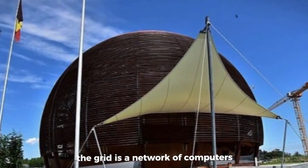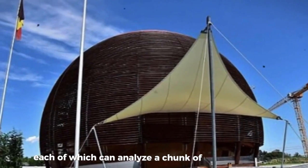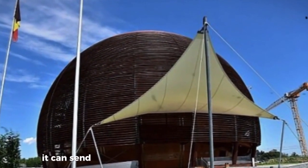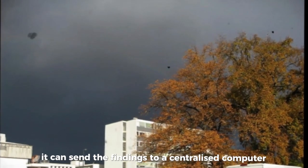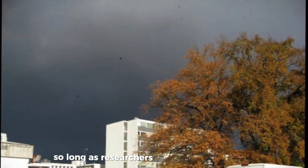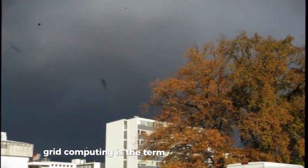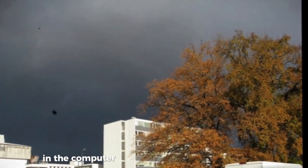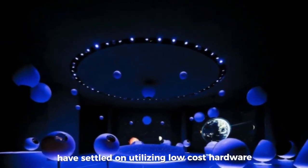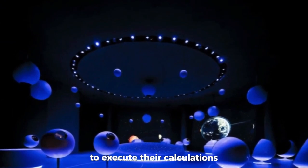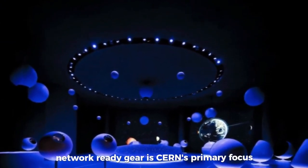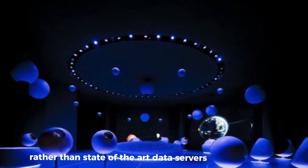The grid is a network of computers, each of which can analyze a chunk of data on its own. Once a computer completes its analysis, it can send the findings to a centralized computer and accept a new chunk of data. The method is effective so long as researchers can partition the data. Grid computing is the term used to describe this method in the computer industry. The researchers at CERN have settled on utilizing low-cost hardware to execute their calculations. Commercially available, network-ready gear is CERN's primary focus, rather than state-of-the-art data servers and computers.